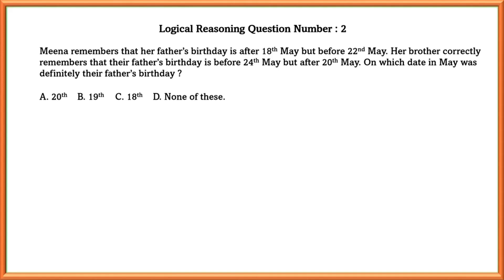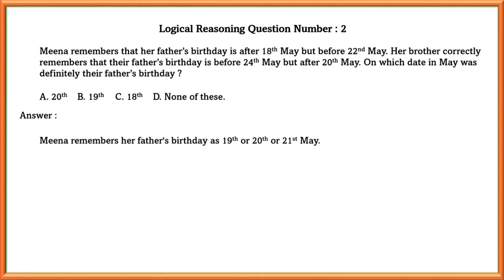Logical reasoning question number two: Mina remembers that her father's birthday is after 18th May but before 22nd May. Her brother correctly remembers that her father's birthday is before 24th May but after 20th May. On which date in May was definitely their father's birthday? To find this out we need to check on which day they are both commonly saying it is their father's birthday.